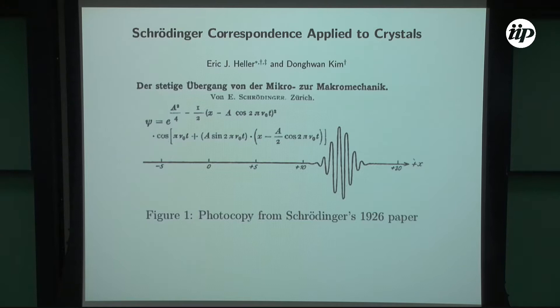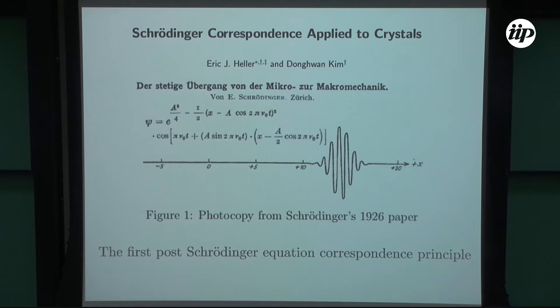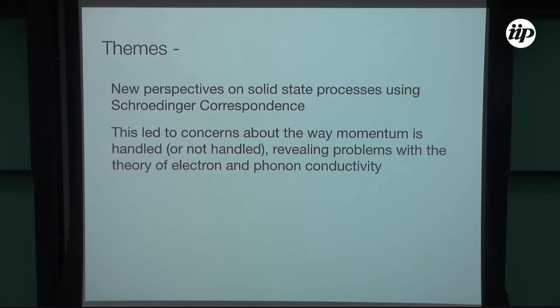It is pretty well known that Schrödinger solved the coherent state wave packet problem in 1926. It wasn't the first quantum mechanics paper, but he had a nice picture of a Gaussian wave packet and knew all about sloshing back and forth without changing shape. I've been working with Gaussians for many years but it suddenly dawned on me that I haven't been taking advantage of them in many-body physics as much as I should. This is the first post-Schrödinger correspondence principle. I want to talk today about some new perspective on solid-state processes using the Schrödinger correspondence, and this led me to concerns about the way momentum is handled—or not handled—for problems dealing with electron and phonon conductivity.